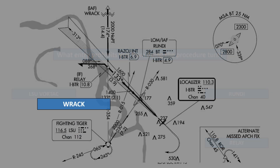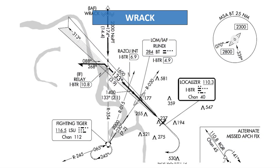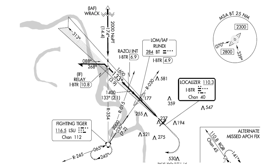It's RAC. Procedure turns are mandatory when depicted, with some exceptions. One of those exceptions is when a route shows 'No PT' — no procedure turn — which is what we see on the segment from RAC to Relay. What we do instead is turn inbound at Relay directly to the approach course.